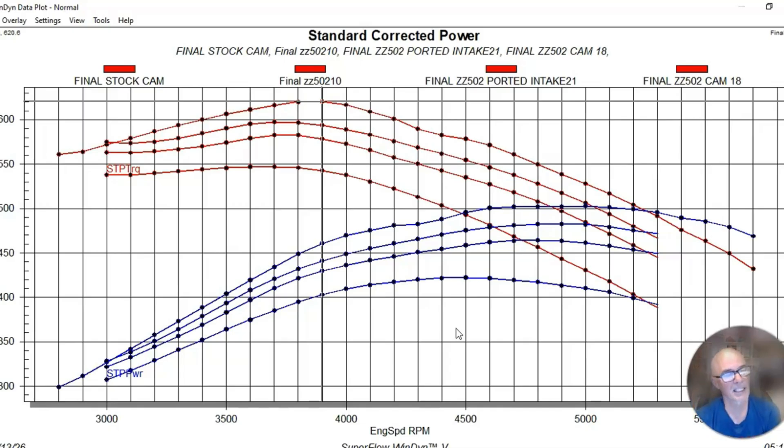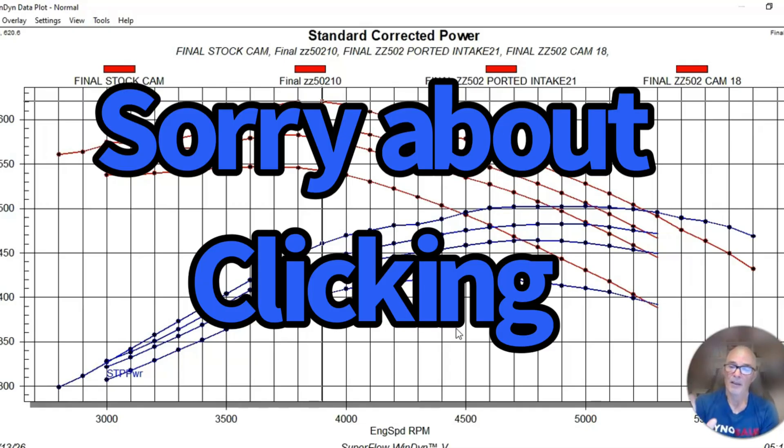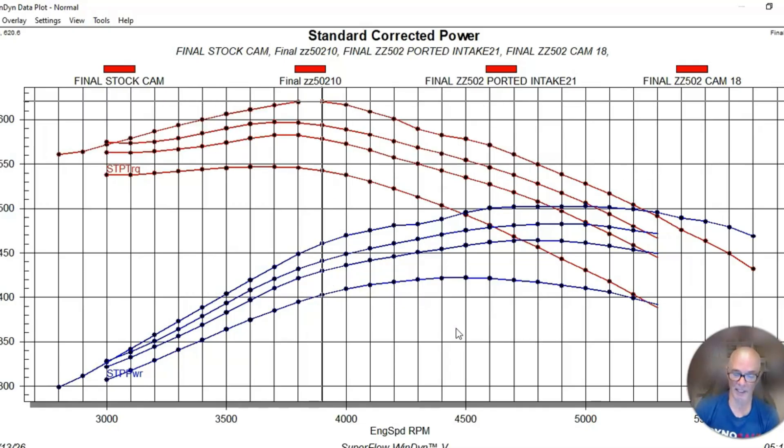They're kind of like sprint car headers, just for making it easy to run on the dyno, with a different collector style and diameter and everything. The headers are definitely different, and I think the combination of these three things had a fairly sizable effect on the power curve. We re-established our baseline with our ZZ502 camshaft, which we know is about 45 horsepower or so better than stock. This was our new established baseline so now we can test the Dart intake manifold and the RHP Elgin Stage 1 camshaft.